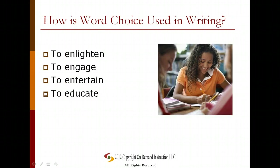So how do we use word choice in writing? Writers actually have many different purposes for writing, and they'll use word choice to get those purposes across. Sometimes they're trying to enlighten, sometimes to engage, sometimes a writer's purpose is to entertain, and sometimes it is to educate. Word choice will be a little bit different depending upon the type of writing that is being done.